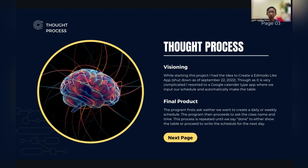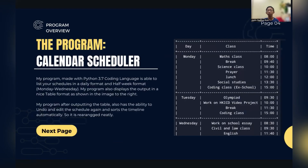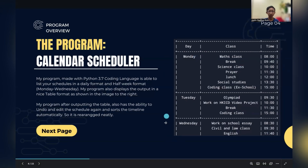The final product: the program first asks whether we want to create a daily or weekly schedule. The program then proceeds to ask the class name and time. This process is repeated until we say 'done' to either show the table or proceed to write the schedule for the next day. Here is an example of the table we will be creating.